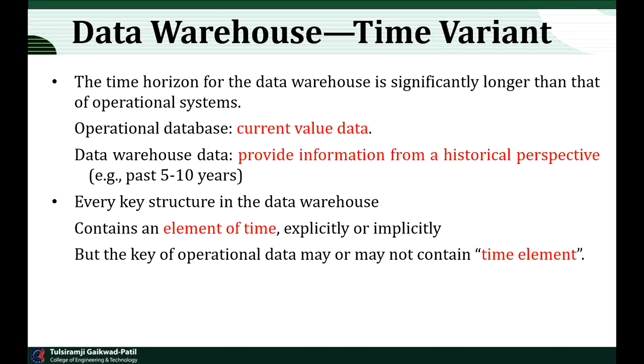Time-variant means the time horizon of the data warehouse is significantly longer than that of the operational system. The operational database is a current-value database, and it cannot provide analytical decisions whenever an organization requires them. But data warehouse data provides information from a historical perspective — like the past 5 years, 10 years, or more. Every key structure in the data warehouse contains an element of time, explicitly or implicitly, whereas the key of operational data may or may not contain a time element.